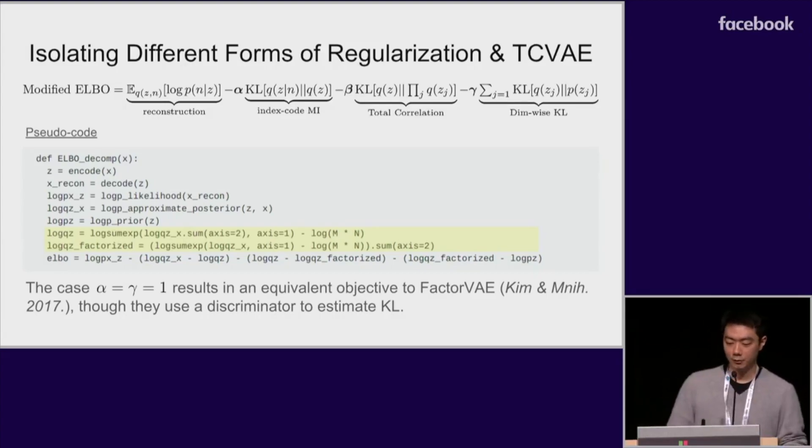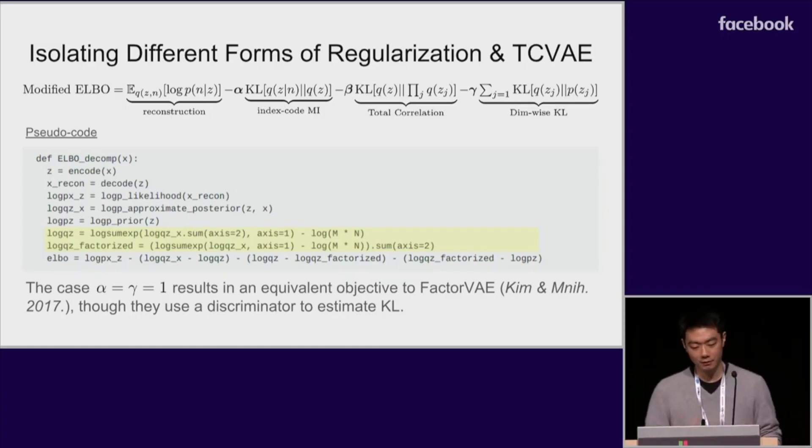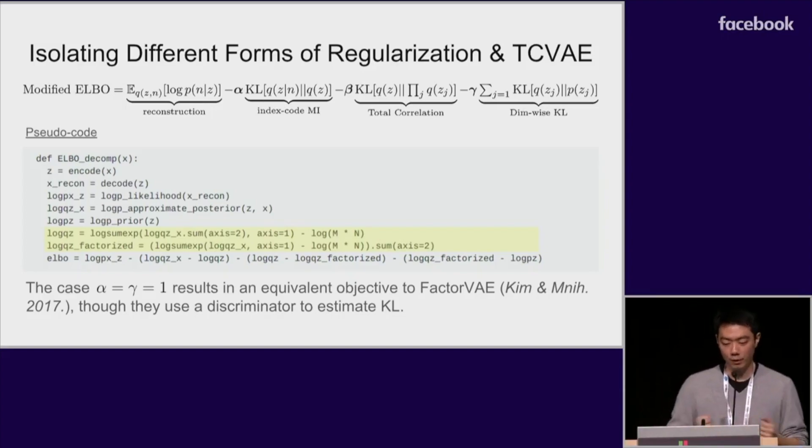Incidentally, this results in an equivalent objective to the factor VAE that was proposed by Kim and Mnih last year at the NeurIPS workshop, although they used an additional discriminator network to estimate KL for training. In our case, not only do we not require any additional hyperparameters or neural networks, we can arbitrarily weight the other terms should the need arise. And we did try this in our ablation experiments.